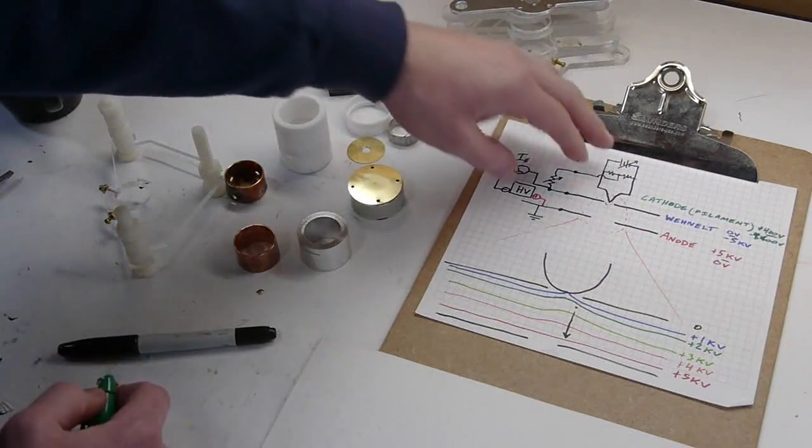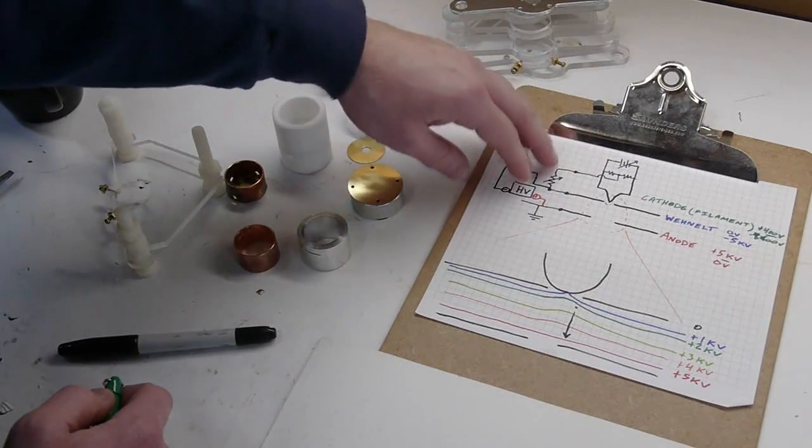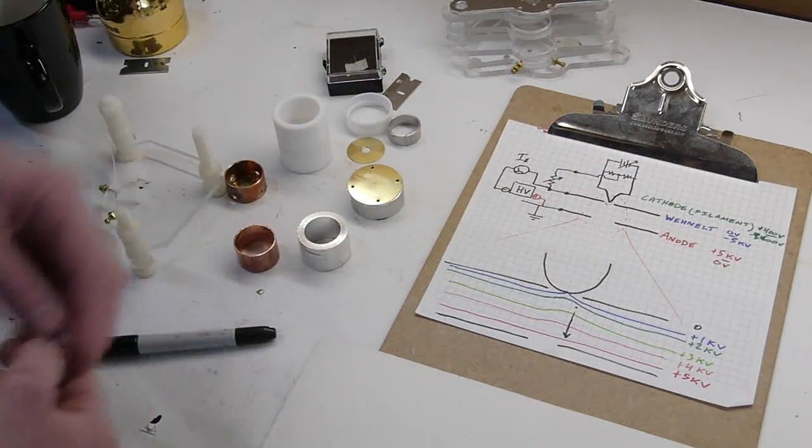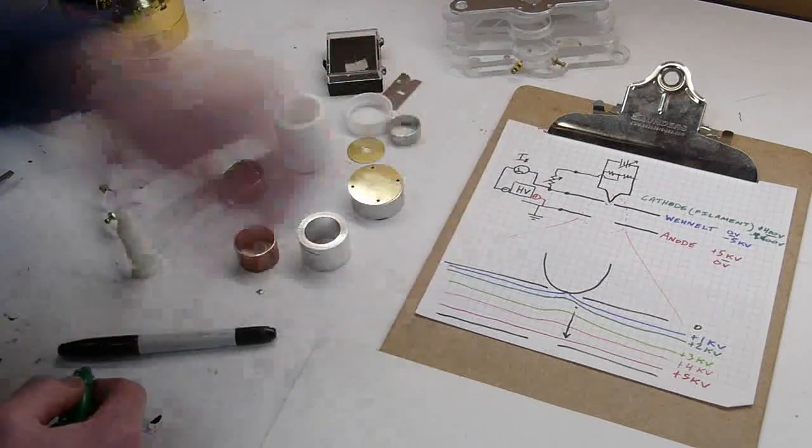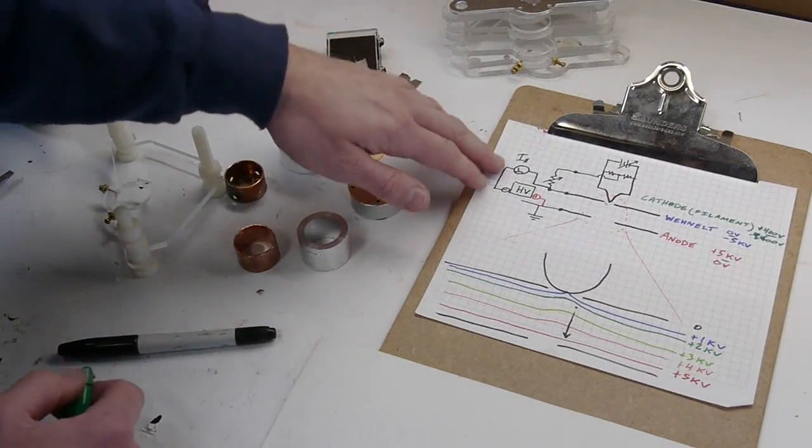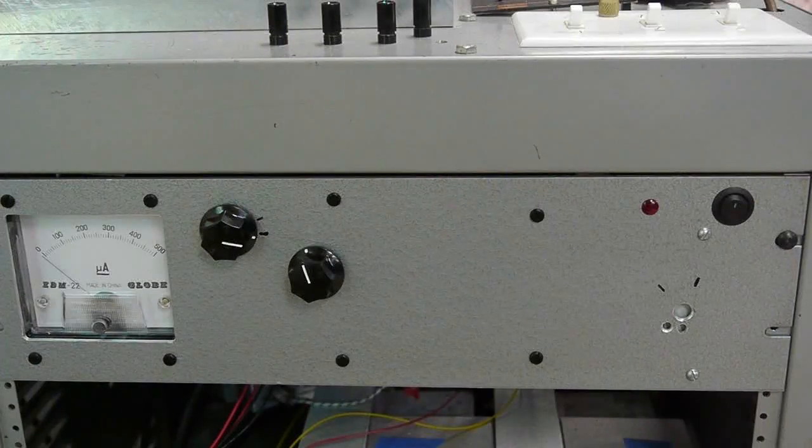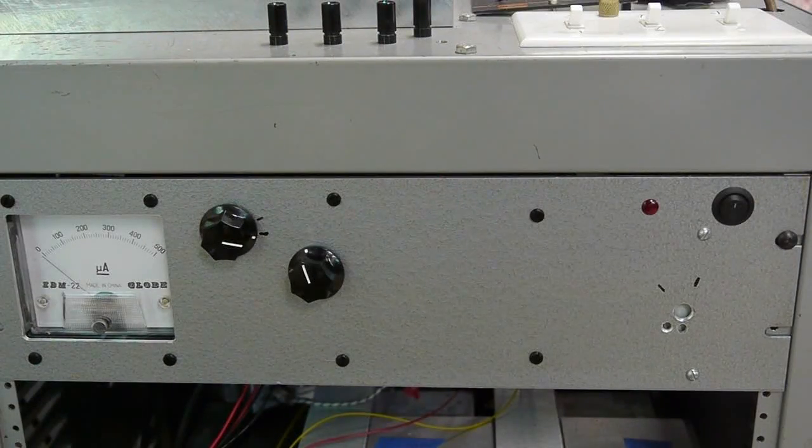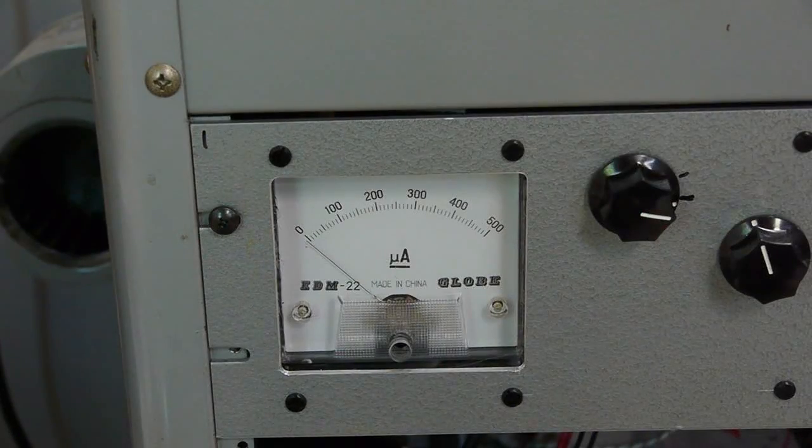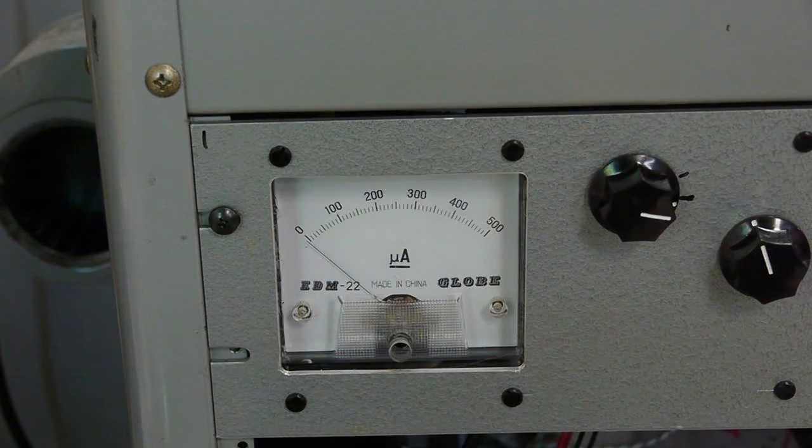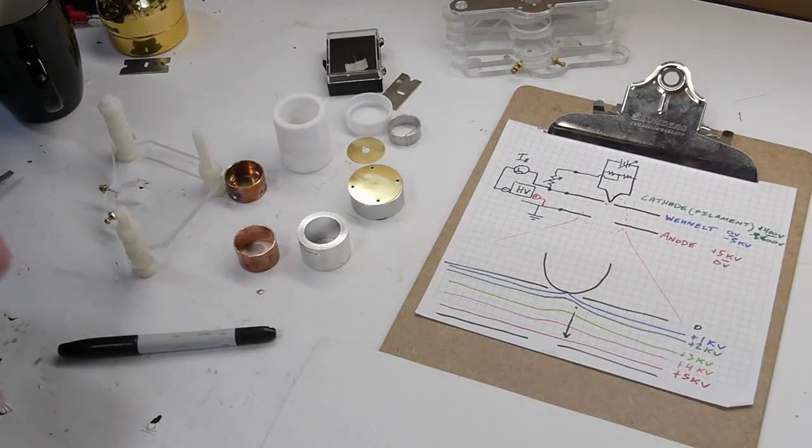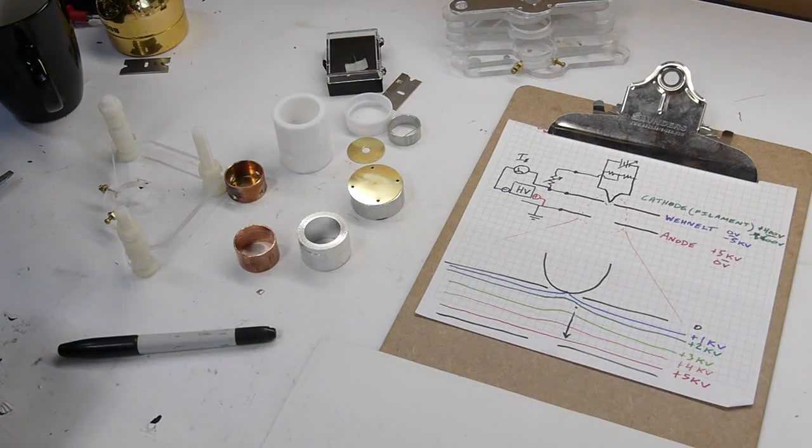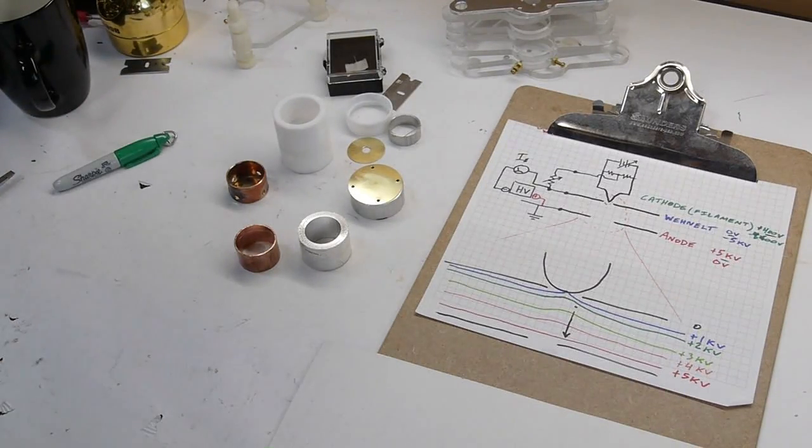So some round numbers for you: I think the cathode is normally about 400 volts higher than the Wenelt. I don't actually know, because in my system it's not measured. I'm just using this resistor. But you do want to know the emission current, so I have that microammeter which shows how much current is actually going into the cathode. And that tells you how many electrons are being emitted from there.